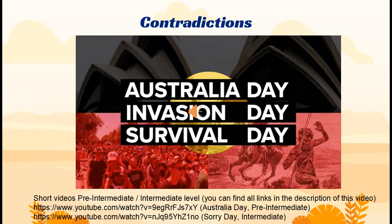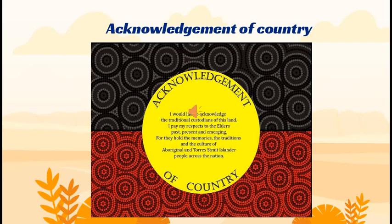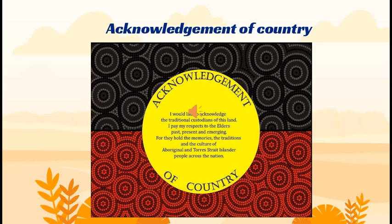But let me start with the acknowledgement of country — a traditional formula used by Australians at the beginning of public events. You can see the text on your screen. Usually, the name of the tribe or clan that lives in a certain place is mentioned. In my case, I would like to acknowledge the traditional custodians of this land, the Eora nation. I pay my respect to the elders, past, present and emerging, for they hold the memories, the traditions and the culture of Aboriginal and Torres Strait Islander people across the nation.